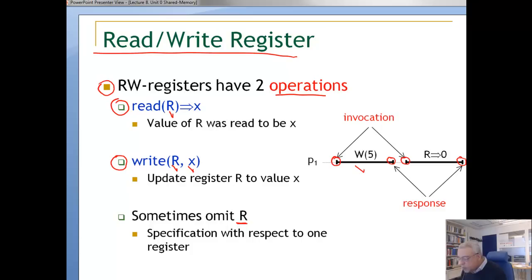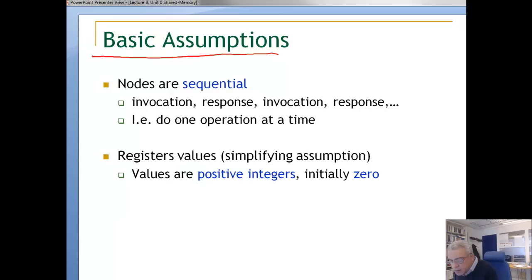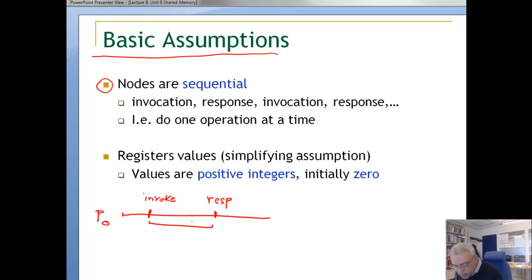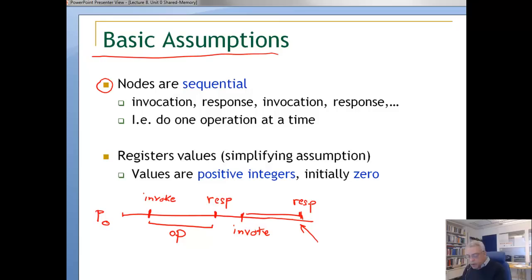We will have some basic assumptions. The first assumption is that nodes are sequential. If you look at a node P0, an operation will start with an invoke event and continue until a response event. This node cannot perform any other operation until it gets the response of the current operation. After that, we'll have another invoke followed by a response event. So from a node's point of view, we see events in the form: invocation, followed by a response, invocation, followed by a response — basically, we do one operation at a time.